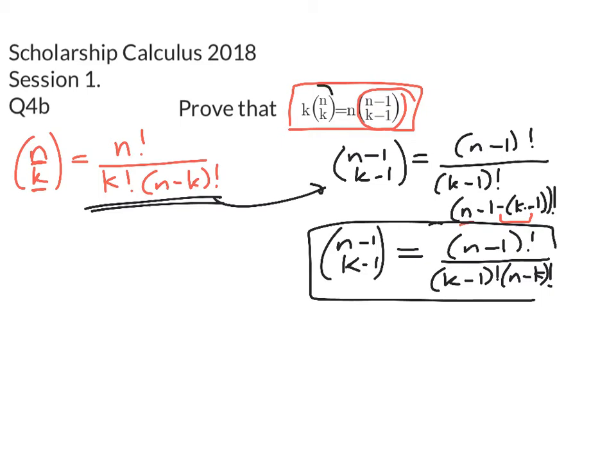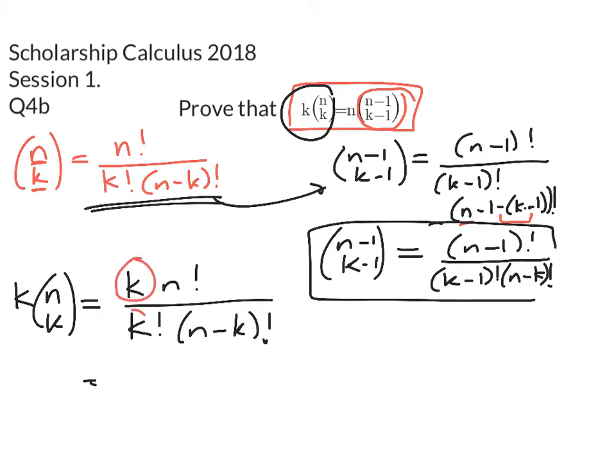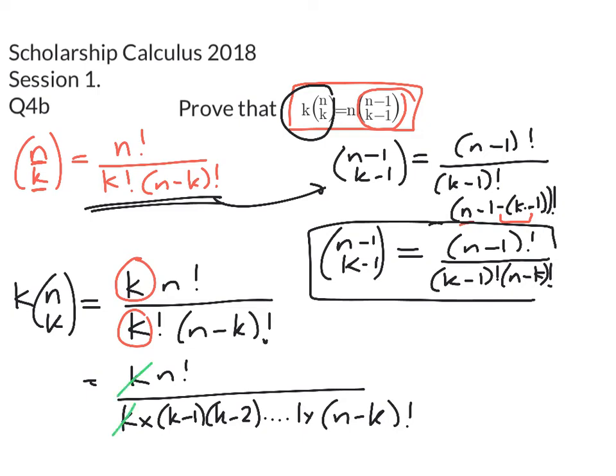Right, so let's look at what the left-hand side is. k times n choose k. So k times n choose k is k times n factorial over k factorial times (n-k) factorial. We want to end up with n times (n-1) choose (k-1). We can see that we've got a common factor in here. So k minus 2 and so on down to 1 times (n-k) factorial. We can divide through by k. Now we're going to go to a new slide and keep on going from here.